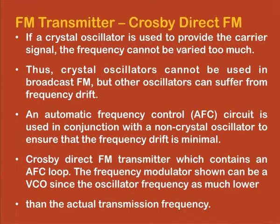A direct FM modulator with the required frequency stability can thus be achieved. However, crystal oscillators cannot be directly used for FM broadcast because achieving wide band FM — needed for better protection against noise and interference — requires a reactance-based modulator whose frequency stability must be controlled by an automatic frequency control circuit. The Cross-B direct FM transmitter uses an AFC loop with a VCO and a crystal oscillator for this purpose.